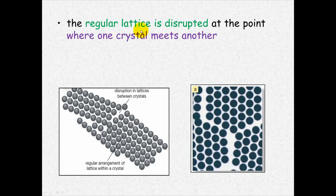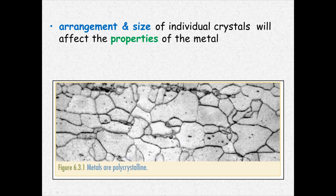The regular lattice is disrupted at the point where one crystal meets another. These are called grain boundaries. And it is the arrangement and the size of the individual crystals which affects the properties of the metals.